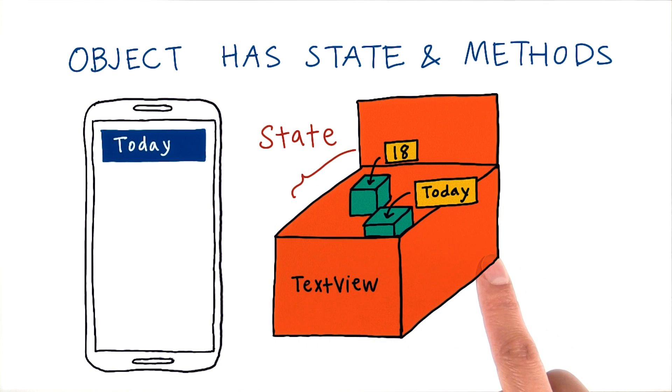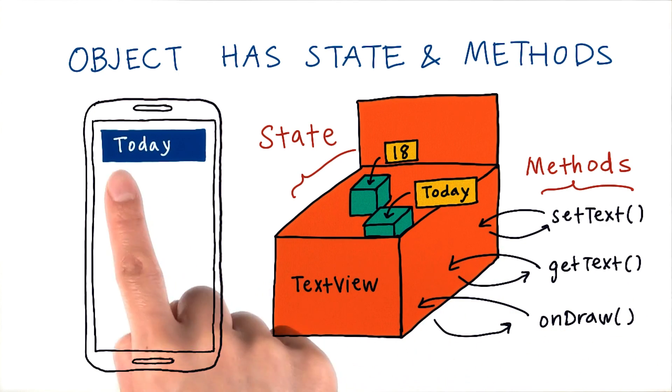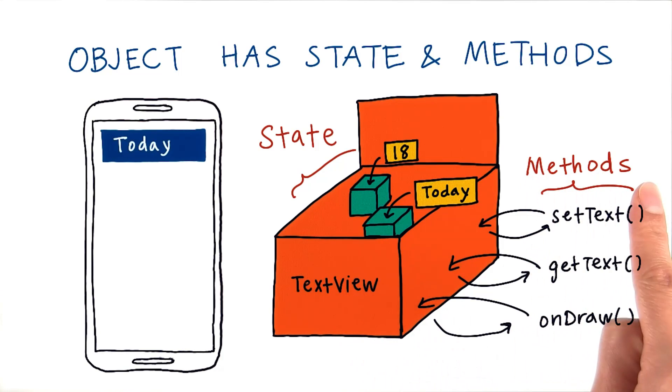To interact with this Java object and change it while the app is running, we can call methods on the text view. We learned about methods earlier in lesson three. Some example methods on a text view are setText and getText. You can also have methods like setTextSize, or getTextSize, and so on. Each of these methods just executes a list of instructions. You can have more complex methods like onDraw, which handles drawing the text view onto the screen. So overall, this text view object holds state information on what this text view contains, and you can call methods to interact with this text view, such as to modify the state, or to do more complex actions.